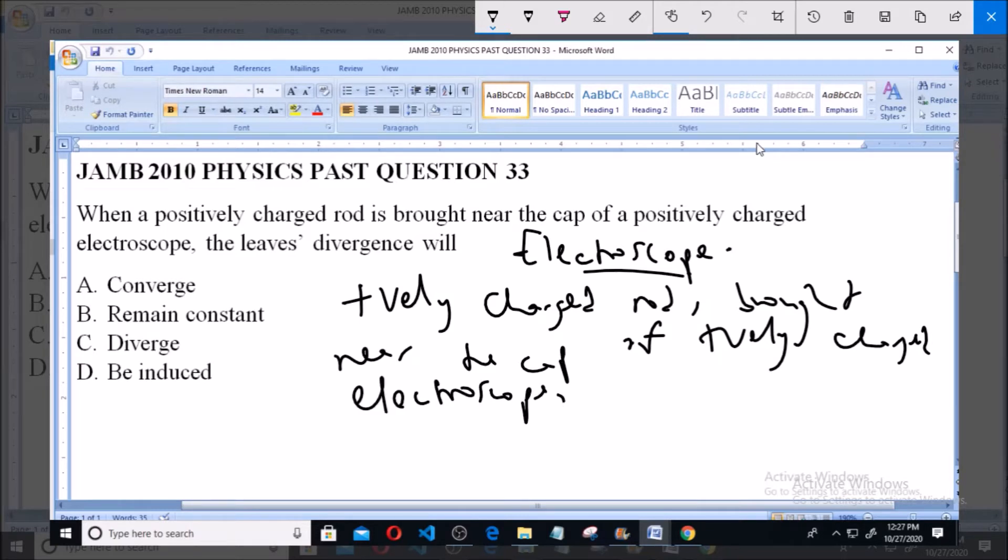So, we are asked what will happen to the leaves when a positively charged rod is brought near the cap of a positively charged electroscope. Now, in an electroscope,